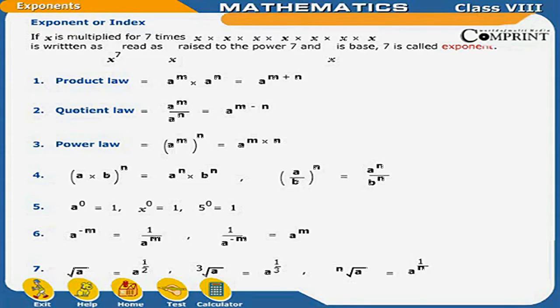A into B whole to the power N is equal to A to the power N into B to the power N. And A upon B whole to the power N is equal to A to the power N upon B to the power N.